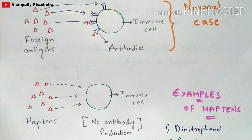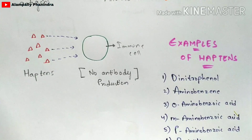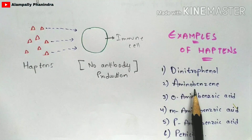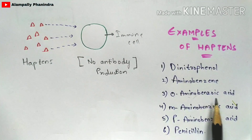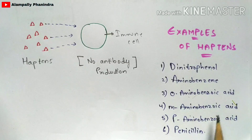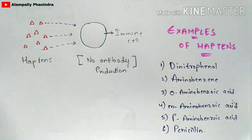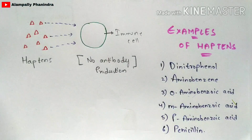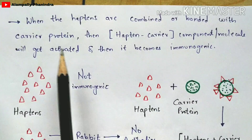Some of the best examples of haptens are: dinitrophenol, amino benzene, meta-amino benzoic acid, para-amino benzoic acid, and penicillin.